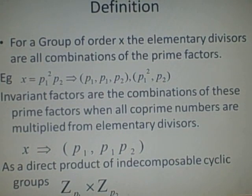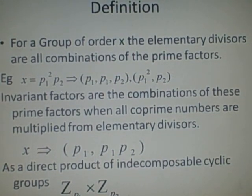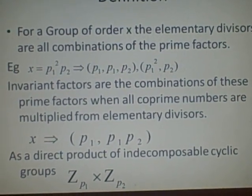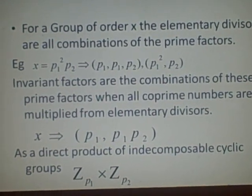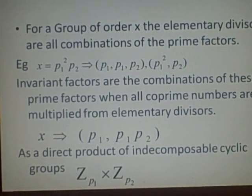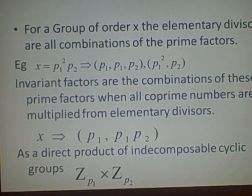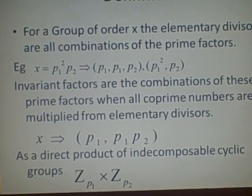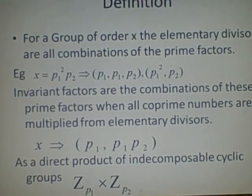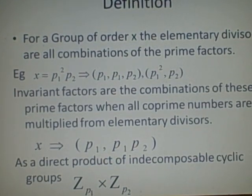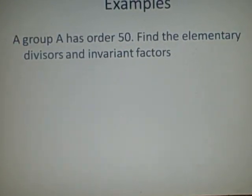And if you want to write these as a direct product of indecomposable cyclic groups, then you just do it as z of p1 cross z of p2 cross z of p3, however many times you need to, or z of p1 squared, and so on. I think you get the idea.